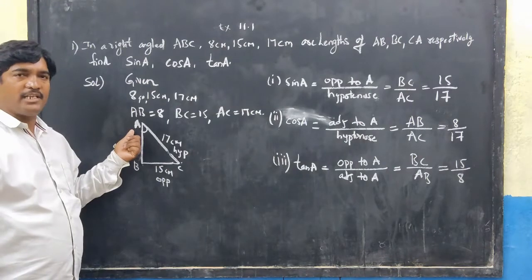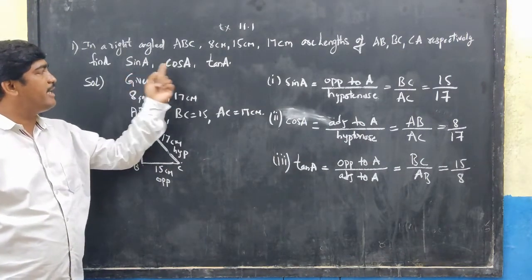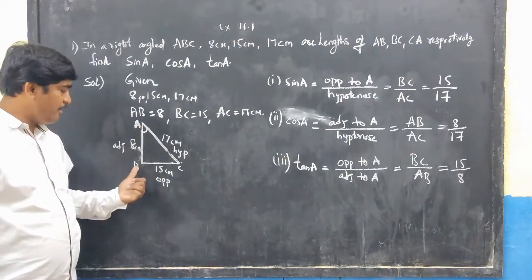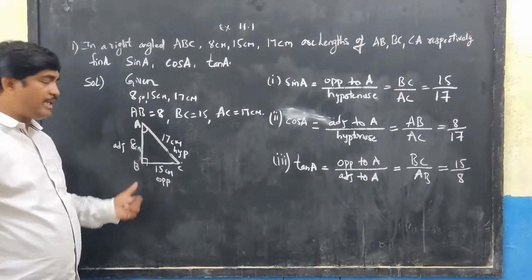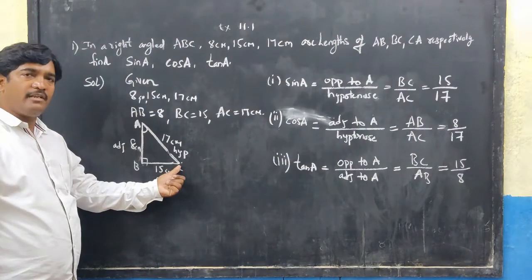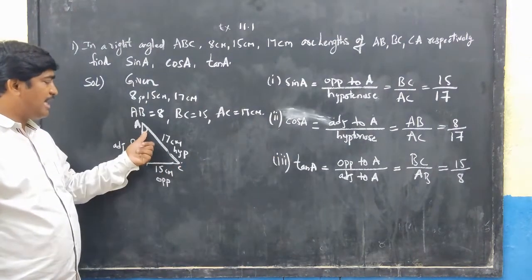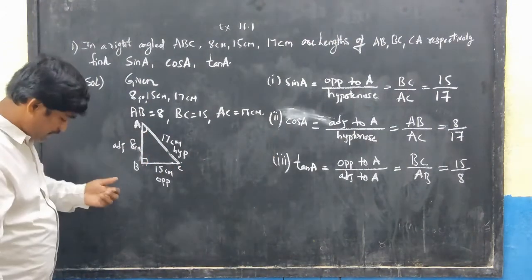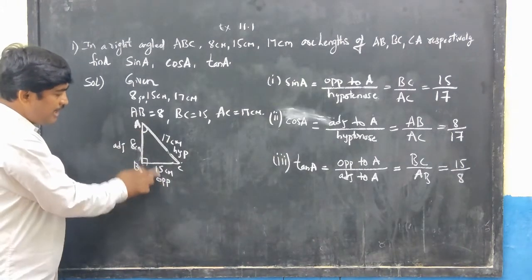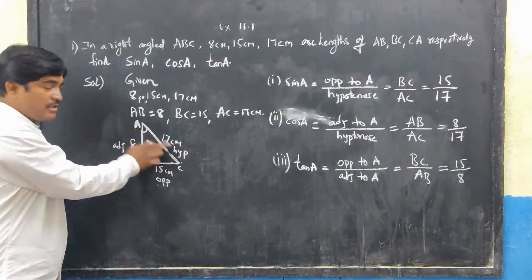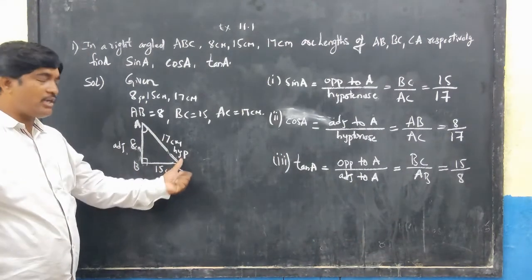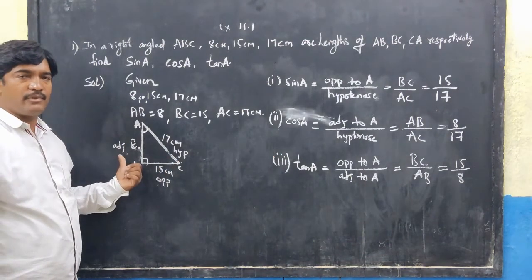Now I will draw the right angle triangle. Since the problem asks for sine A, cos A and tan A, the angle should be at A. I draw figure A, B, C such that B is at a right angle. From this figure, BC is the opposite, AB is the adjacent, and AC is the hypotenuse — the longest side.